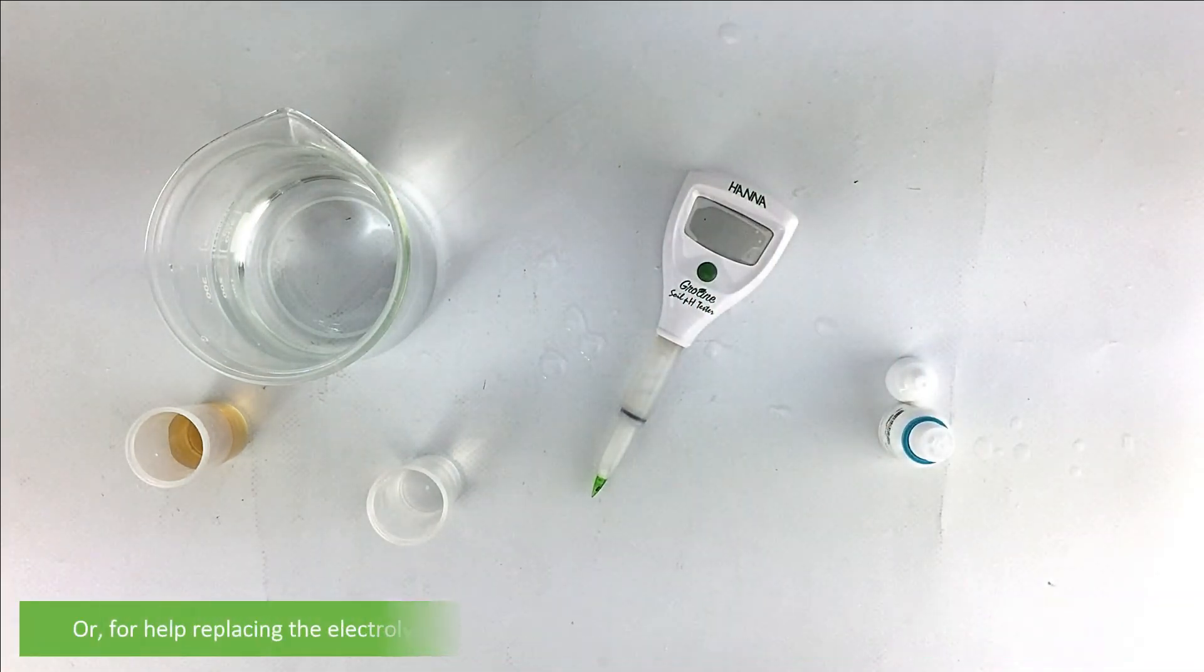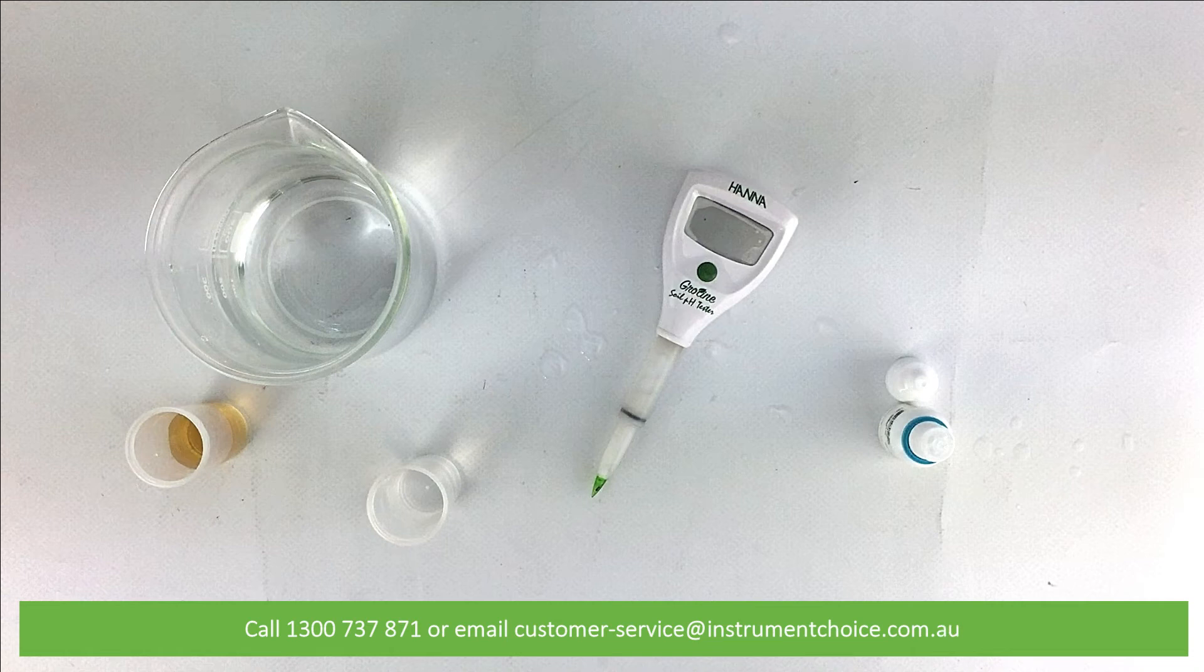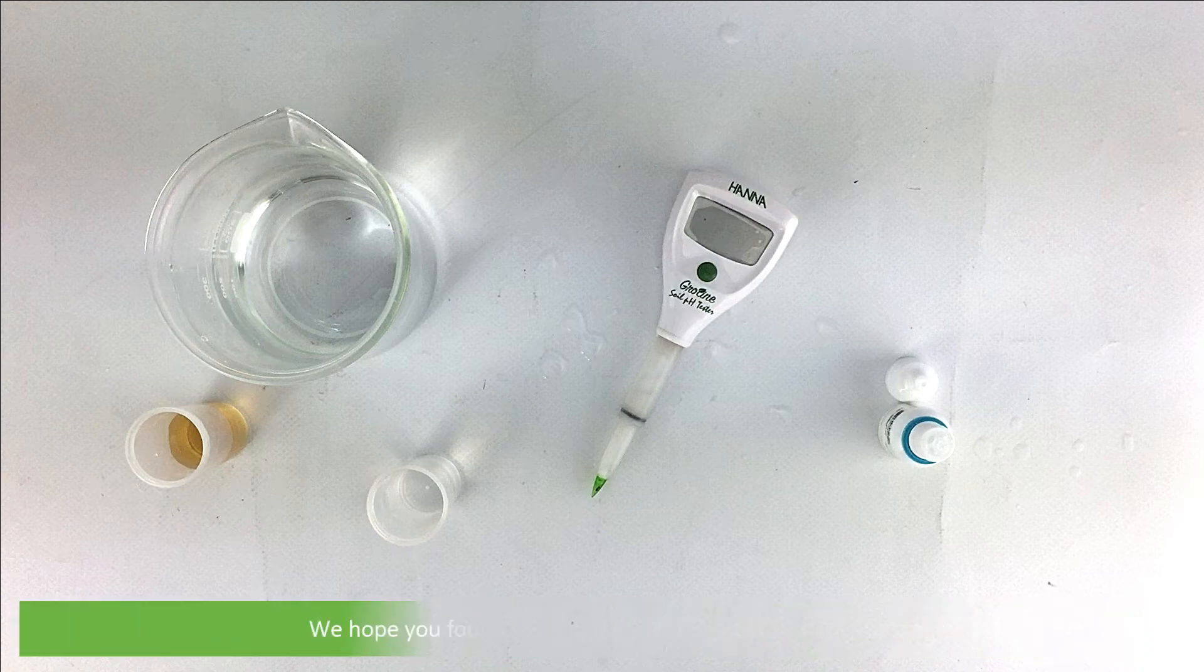For help replacing the electrolyte solution in your HI 981030, speak with an Instrument Choice scientist. Call 1300 737 871 or email customer-service@instrumentchoice.com.au. We hope you found this video helpful. Thanks for watching.